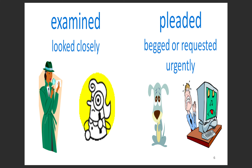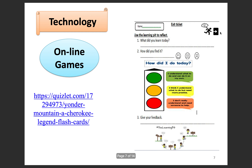Next word is examined. You can see over here we have a detective and she's examining a letter — maybe she's trying to find clues. Maybe you have been examining this PowerPoint to figure out what you need to learn. When you examine something, it means you look at it closely. Next word is pleaded. If someone pleaded, it means they begged or requested urgently. Do you see how this dog over here is begging? Maybe you pleaded with your parents to not make you do any homework during the break. On the last part of the vocabulary, you can go to the online game over here — hit this link and play the game to make sure you've got your vocabulary down.